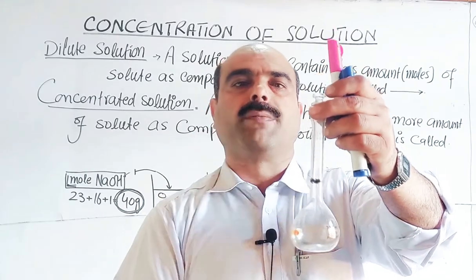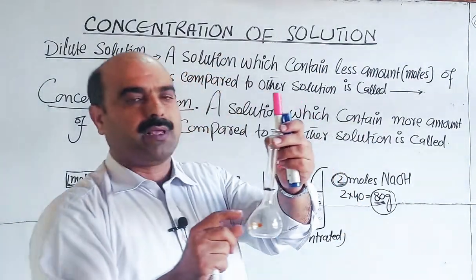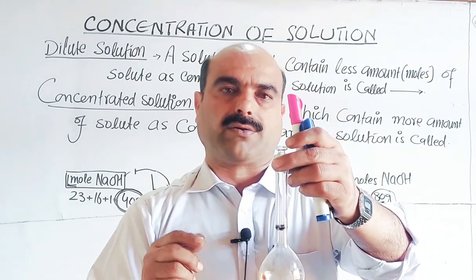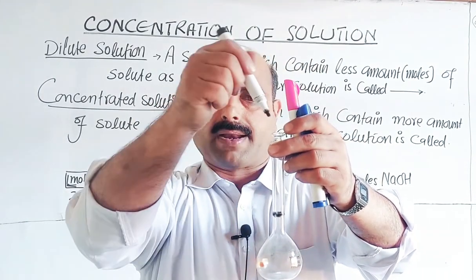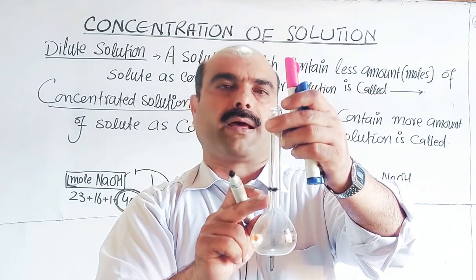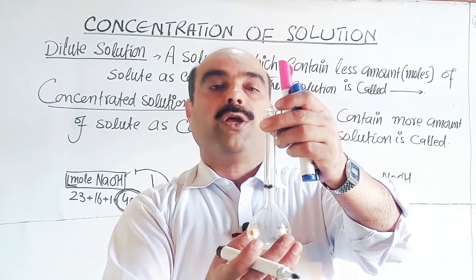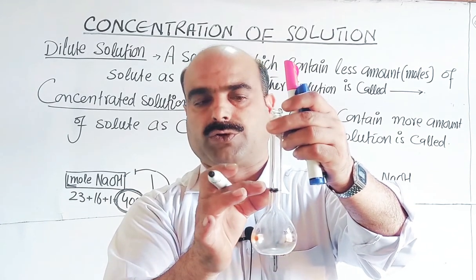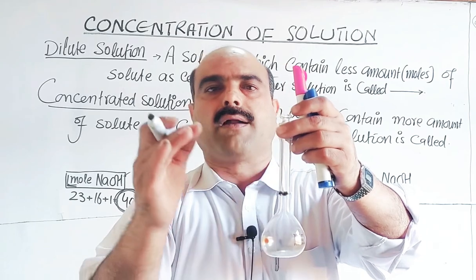In the other flask, dissolve two moles sodium hydroxide — 80 grams — in a little solvent first, then add water drop by drop until the total volume reaches 100 ml. In this 100 ml solution, both solute and solvent are present. Both solutions have the same total volume of 100 ml.